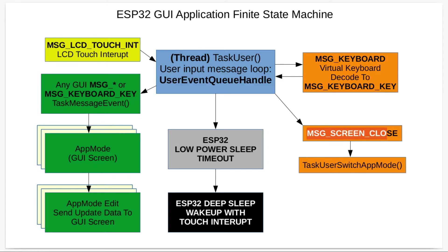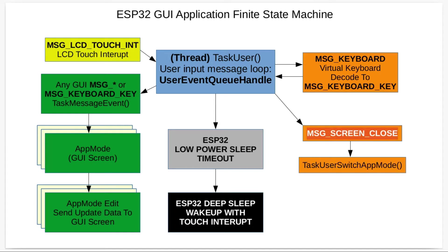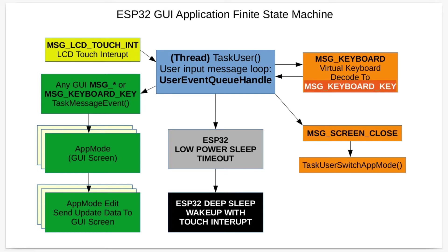The other system message that can occur is screen close. On a GUI screen in the top right-hand corner there's a close button — if someone presses that, the system handles it and calls the task_switch_app_mode function. Whenever the user interface wants to switch screens or app modes (also known as the finite state of the user interface), it must call this function. When the screen close message occurs, the system calls it to switch back to the default app mode.